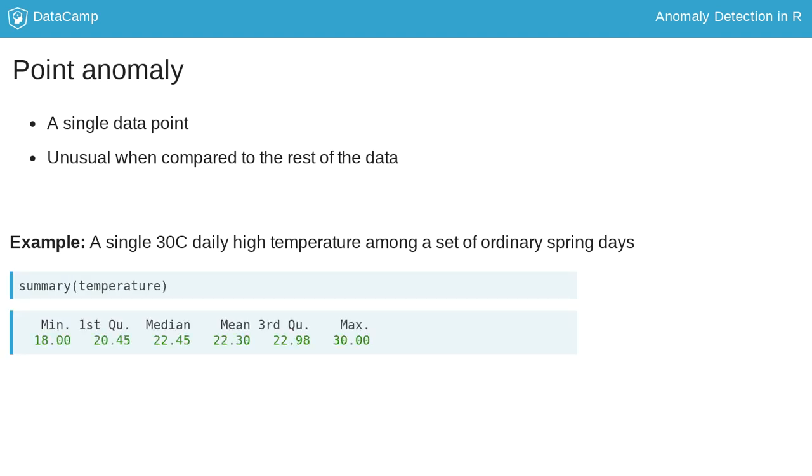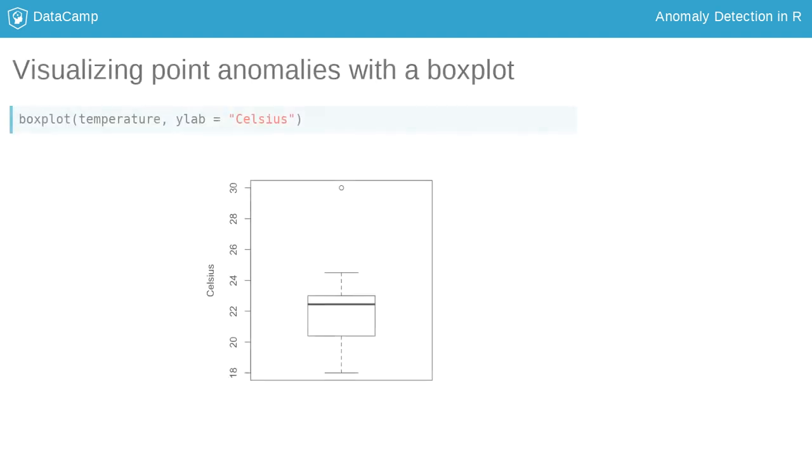The summary function prints the maximum, minimum, upper and lower quartiles, mean, and median, and could give a sense for how far an extreme point lies from the rest of the data. It's quite clear in this case that the 30 Celsius day is a long way from the median of 22.405.